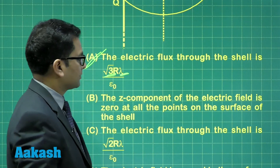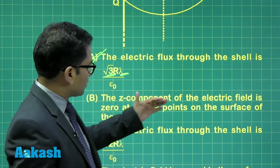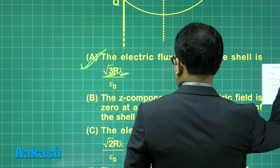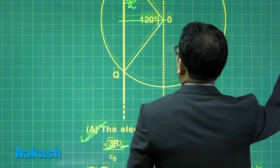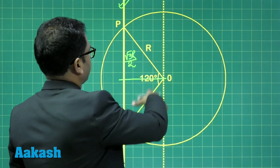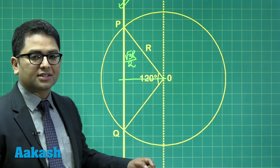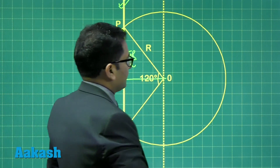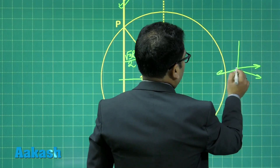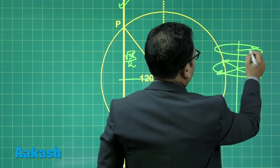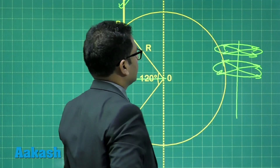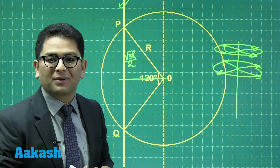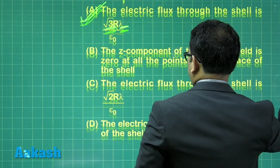So the flux is lambda·root3·r divided by epsilon naught — option A is correct. Next, the z-component of the electric field is zero at all points on the shell surface. This seems fine. For an infinitely long line charge, the electric field goes radially outward in a cylindrical fashion. At any given plane, the field is radially outward, meaning the z-component is zero — the entire field lies in the XY plane. So option B is also correct.